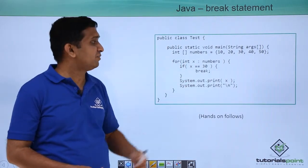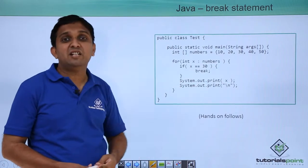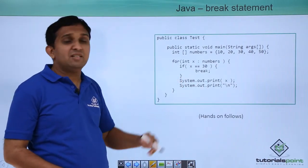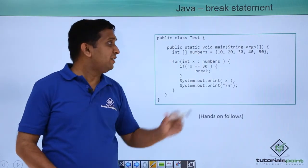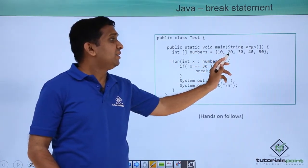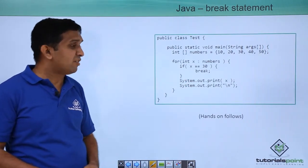X is traversed from first element to last element, and if value 30 occurs, the loop is broken. So output of this example will be 10, 20, and it will come out of the loop. It won't print further values.